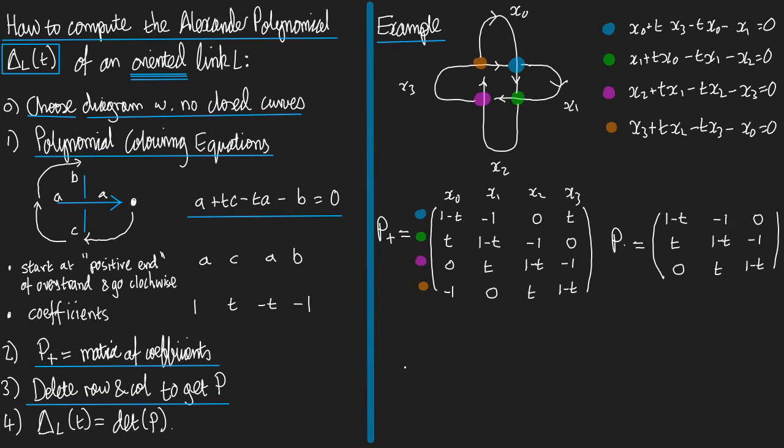And now we can finish the computation with step four, which is that the Alexander polynomial delta L is the determinant of P. So delta L of t is that P. P, you see, is a matrix of polynomials. The entries are polynomials in t: 1-t, t, and -1. So when I work out the determinant in the usual way, what I'm going to get is a polynomial in t.